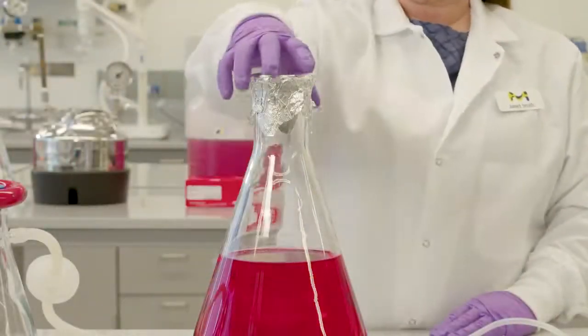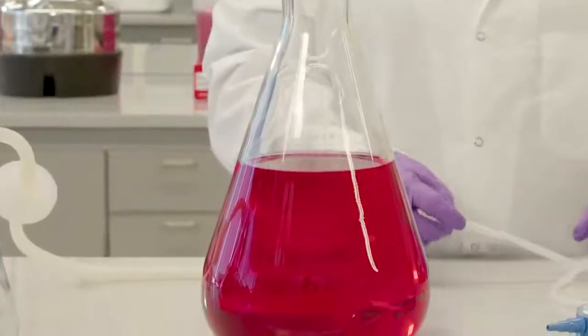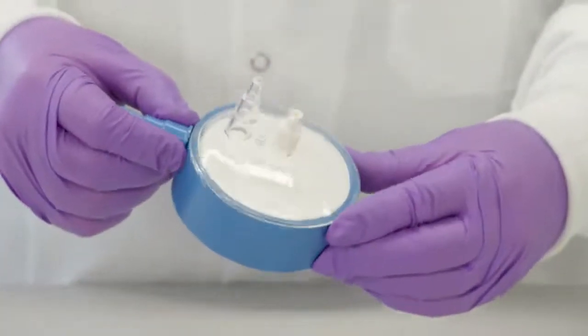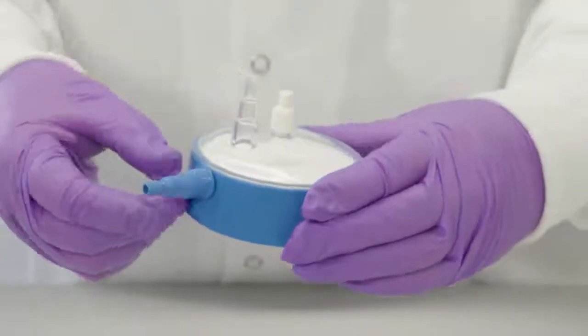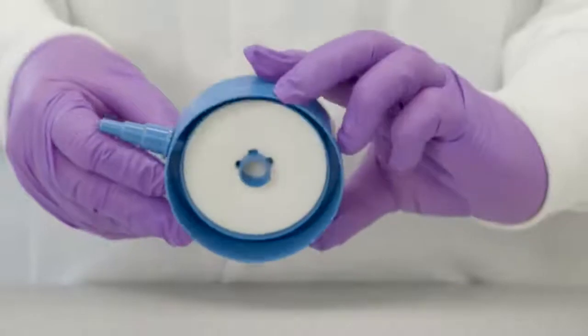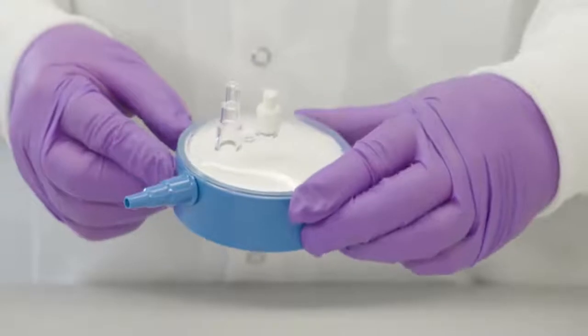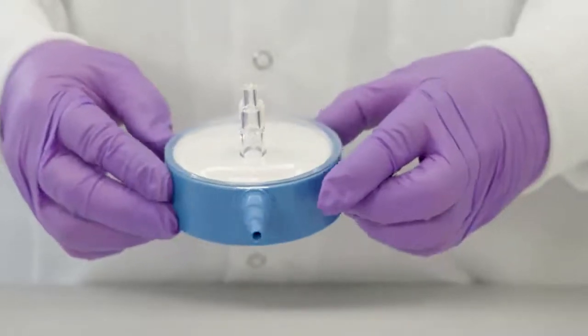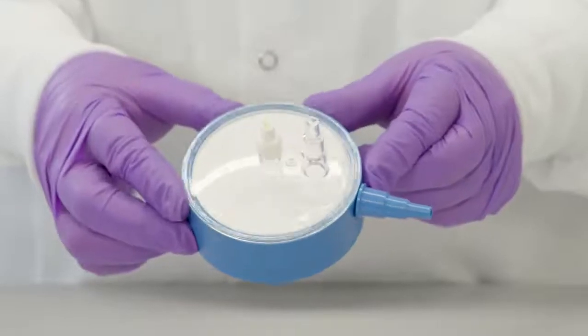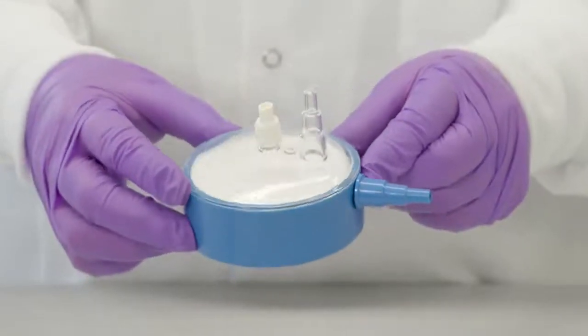First, set up the reservoir with your solution to be filtered using the SteriCap Plus bottle top filter. Alternatively, a peristaltic pump could be used. This filter device can be used to filter most aqueous solutions and medias, but check the user manual for chemical compatibility. Always follow usage and safety precautions and guidelines when using the system with vacuum pressure. Today we will be filtering a simulated tissue culture media.